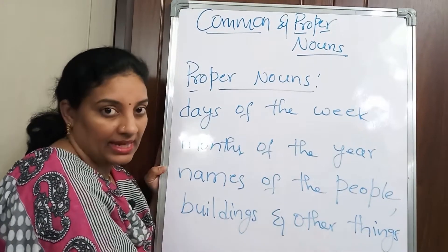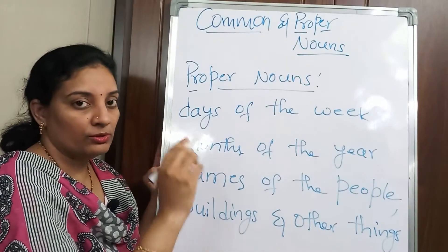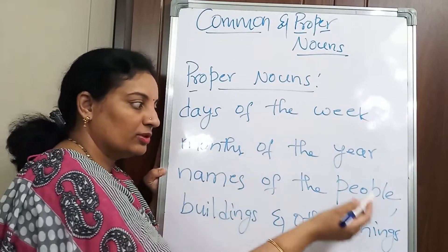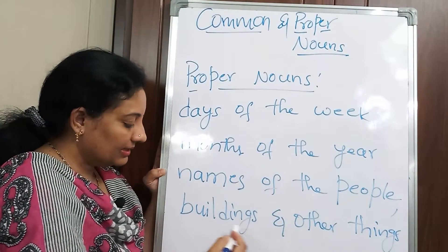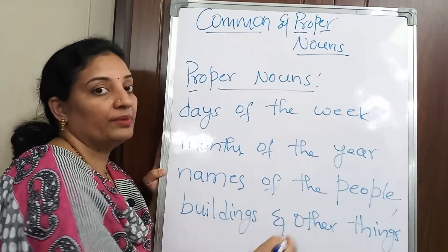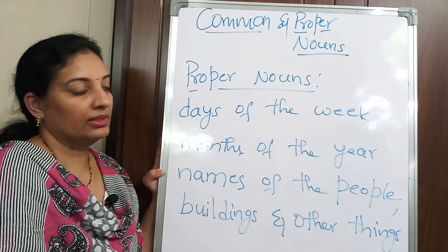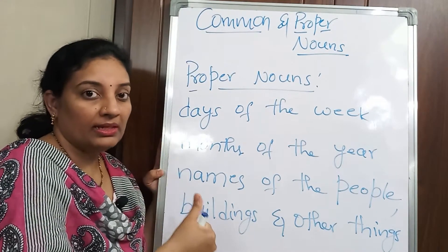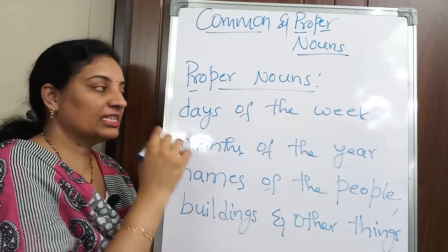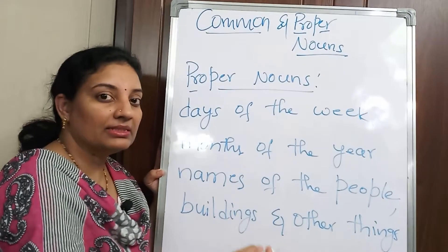All names come under proper nouns. Days of the week, months of the year, names of people, buildings — anything with a name should be capitalized. The thumb rule for proper nouns is: you should always capitalize proper nouns, irrespective of their placement in the sentence — whether they start the sentence, are placed in the middle, or end the sentence.